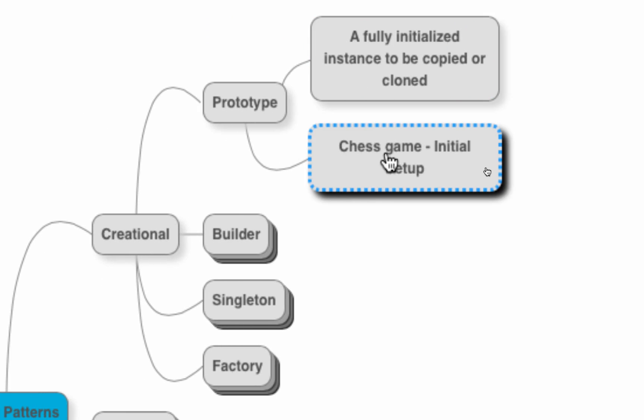Just like the chess game where we reuse the initial setup instead of recreating it every time, there are situations in software where the initial creation of an object is very time-consuming — you might need to call an interface to get something. In such cases, you initialize the object once and later clone it. Where the setup of an object involves significant effort, you create a prototype and whenever a new object is needed you clone the existing prototype.